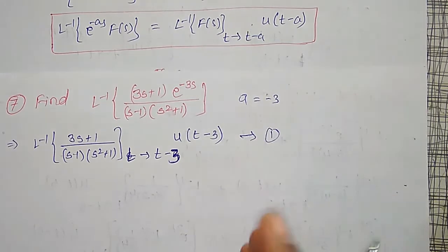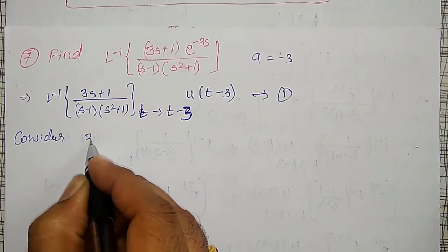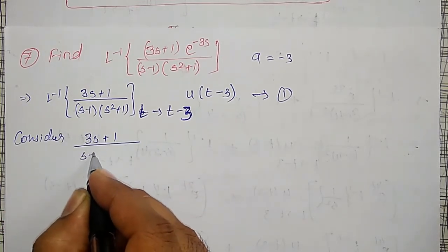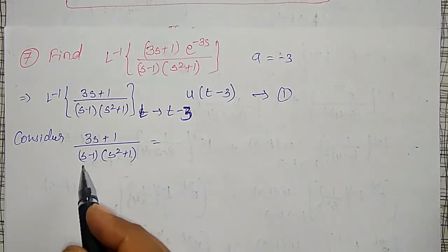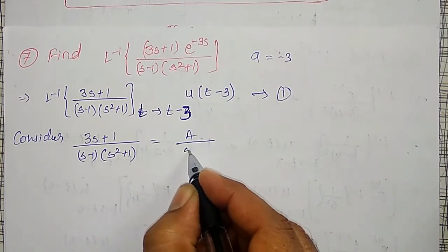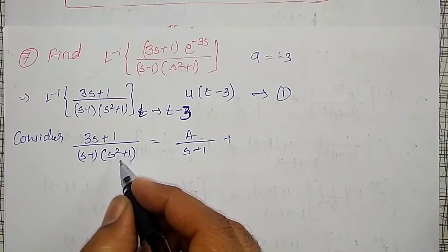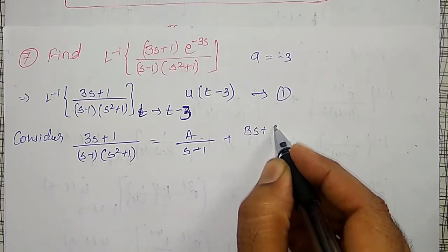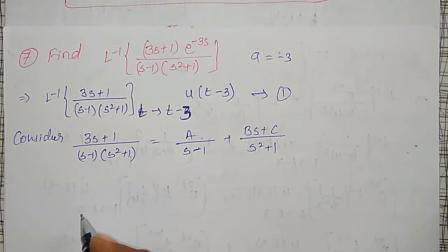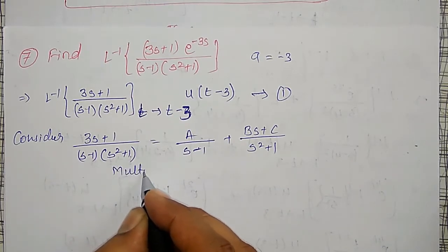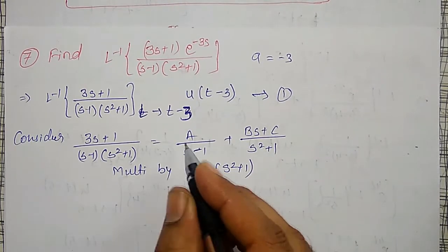Let me call this as equation number 1. Now consider (3s + 1) divided by (s minus 1)(s squared + 1). Partial fractions: the first term is linear, so it is A divided by (s minus 1). The second term is quadratic with no simple factors, so it is (Bs + C) divided by (s squared + 1). Multiplying throughout by (s minus 1)(s squared + 1), we get 3s + 1 = A(s squared + 1) + (Bs + C)(s minus 1).